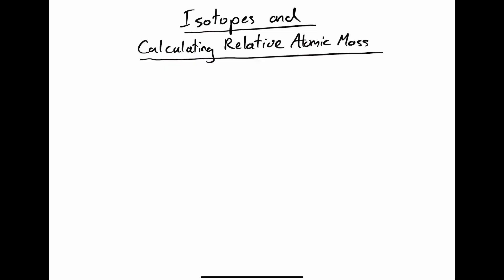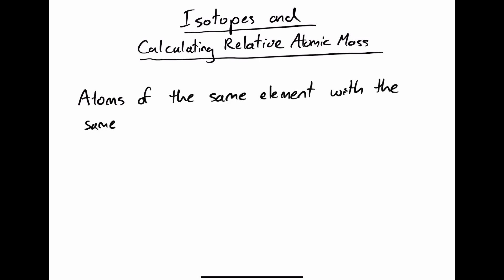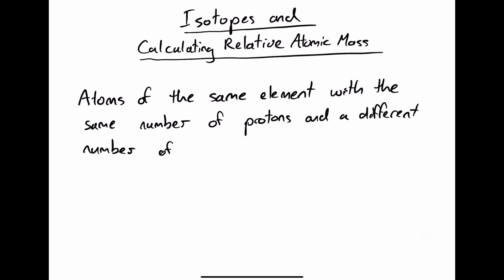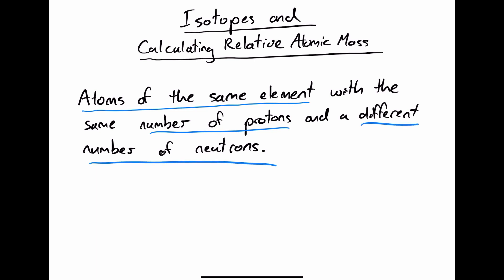In this video we're going to be looking at isotopes and calculating relative atomic mass. Isotopes are atoms of the same element with the same number of protons and a different number of neutrons. If this was a three-mark question, you would get one mark for saying 'atoms of the same element,' a second mark for 'same number of protons,' and the third mark for 'a different number of neutrons.'